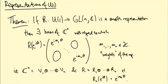Now we're going to prove the theorem about the representations of U(1). We want to prove that any representation is a direct sum R₁ + ... + Rₙ of one-dimensional representations that send e^{iθ} to the 1×1 matrix e^{im_k θ} for some integer m_k.